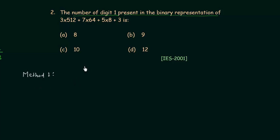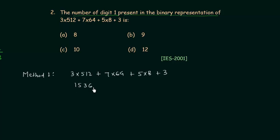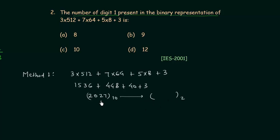Method 1: First we simplify the expression. 3 multiplied by 512 is 1536, 7 multiplied by 64 is 448, 5 multiplied by 8 is 40, plus 3. When you add them all, you get 2027. So 2027 is the decimal number, and we want the binary equivalent so we can count the total number of 1s.